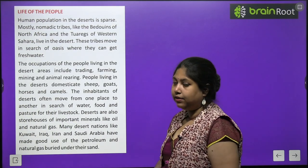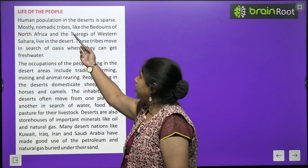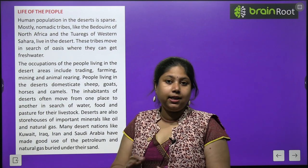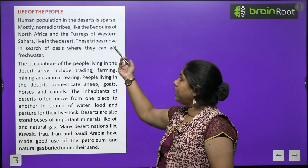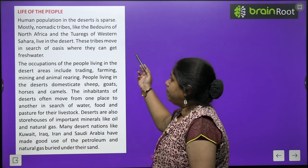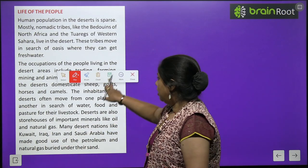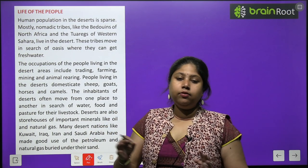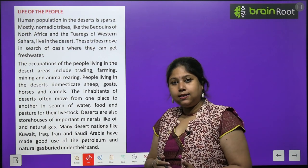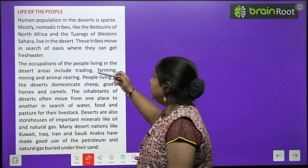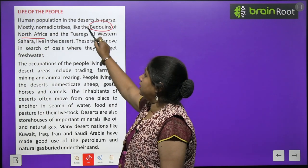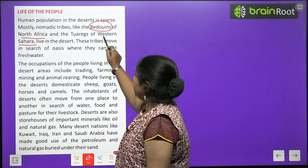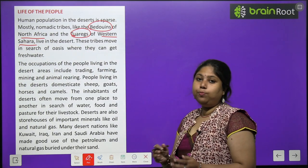Life of the people: human population in deserts is sparse — bahut kam log deserts mein rehte hain. Mostly nomadic tribes like the Bedouins of North Africa and the Tuaregs of Western Sahara live in deserts. Nomadic groups are people who move from one place to another and do not have a permanent residence — ye log ek jagah se doosri jagah bhatakte rehte hain. These tribes move in search of oasis where they can get fresh water.